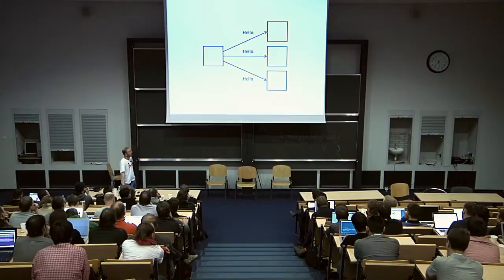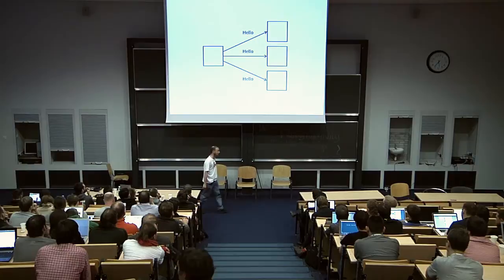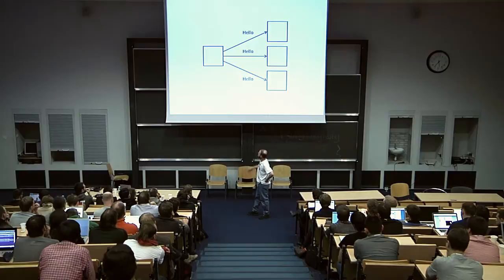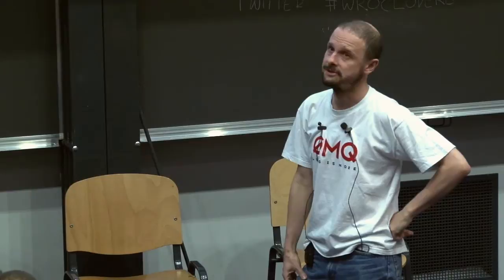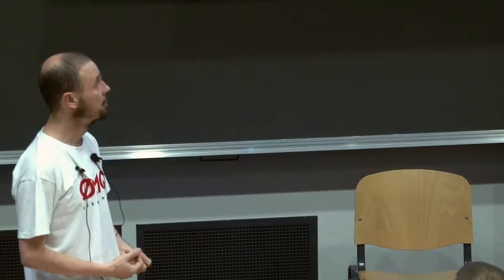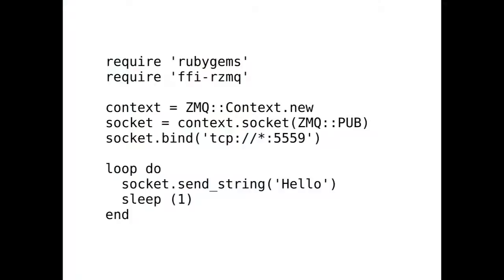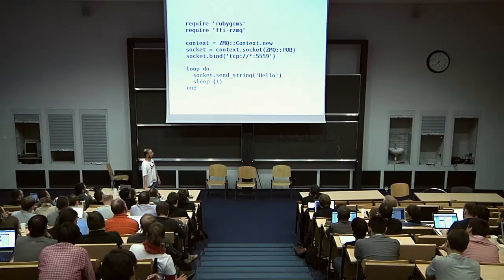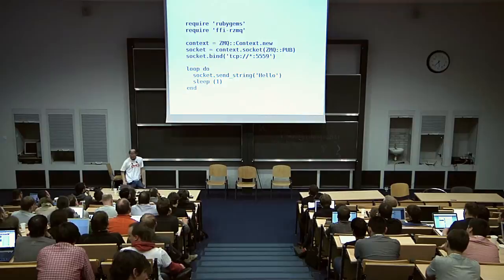What about distributing the same data to many clients? This happens often — for example, distributing stock prices, weather updates, or game state to clients. You want to send the same data to many clients. Here's an example: you create a socket, but with a different socket type — PUB, meaning publisher. This socket sends the same message to everyone, unlike the load-balancing sockets we saw before. You bind the socket to a TCP port and send hello every second. That's it.